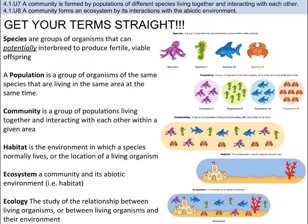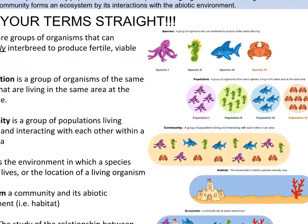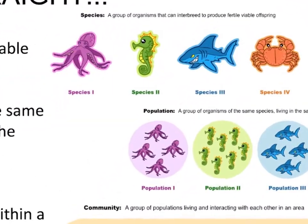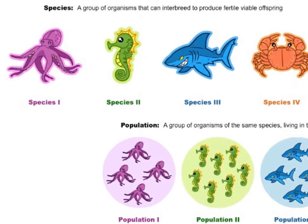Let's explore these terms further — you have to get them straight or you'll end up confused. Starting with species: we can see four species here — the octopus, seahorse, shark, and crab. They are different from each other. Next, a population is a group of organisms of the same species living in the same area at the same time. If a species lives somewhere else, it is not part of that population. In our image we have populations of four species, as each of the same species are found in the same area.